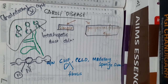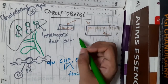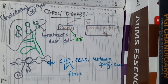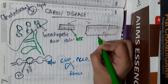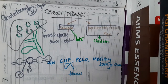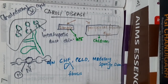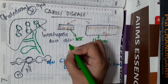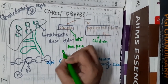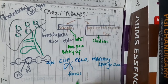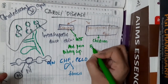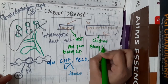In simple Caroli's disease, there is a late presentation, whereas in the periportal fibrotic type, the presentation is in childhood — in children. In simple disease, you see the presence of abdominal pain and also biliary sepsis. Whereas in the periportal type, it is associated with biliary stasis.